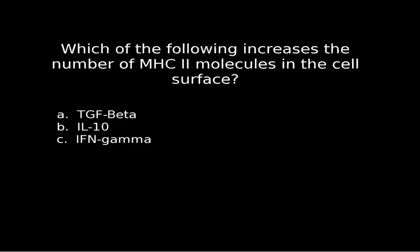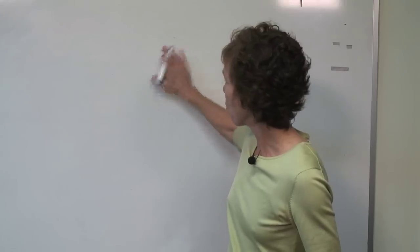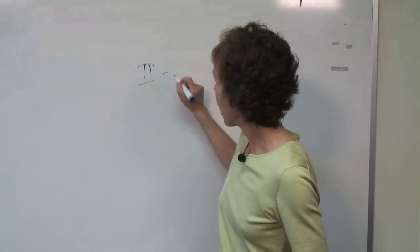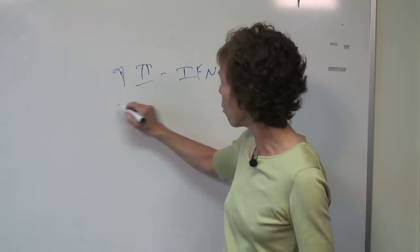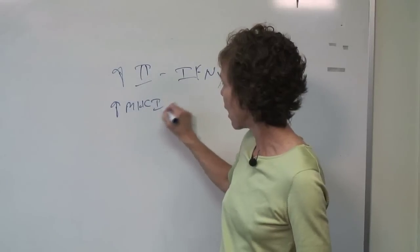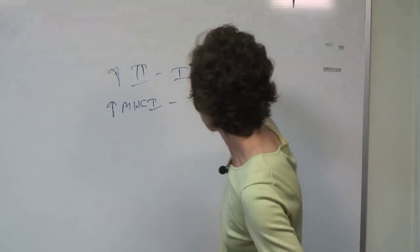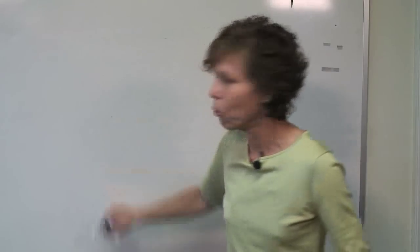Question seven asks which of the following increases the number of MHC class 2 molecules on the cell surface. That's going to be interferon gamma. MHC class 2 molecules are for antigen presentation and are increased with interferon gamma. Interferon gamma will also increase the expression of MHC class 1, whereas interferon alpha and beta will only increase the expression of MHC class 1 molecules — due to the need to identify and protect against viruses.